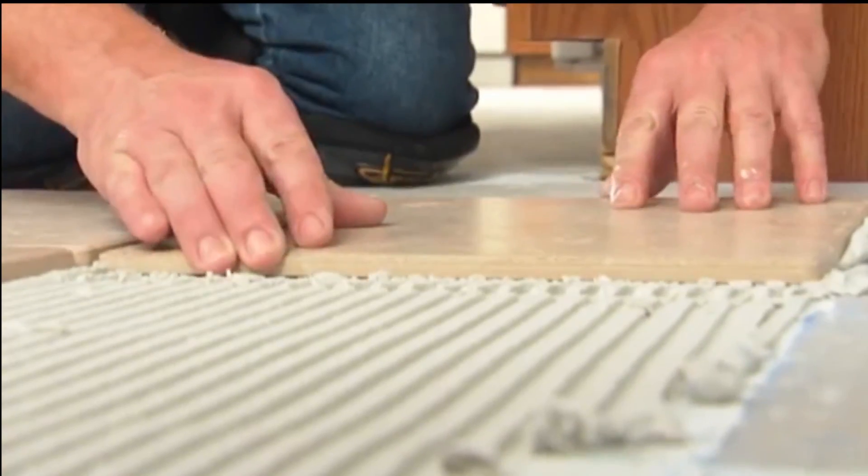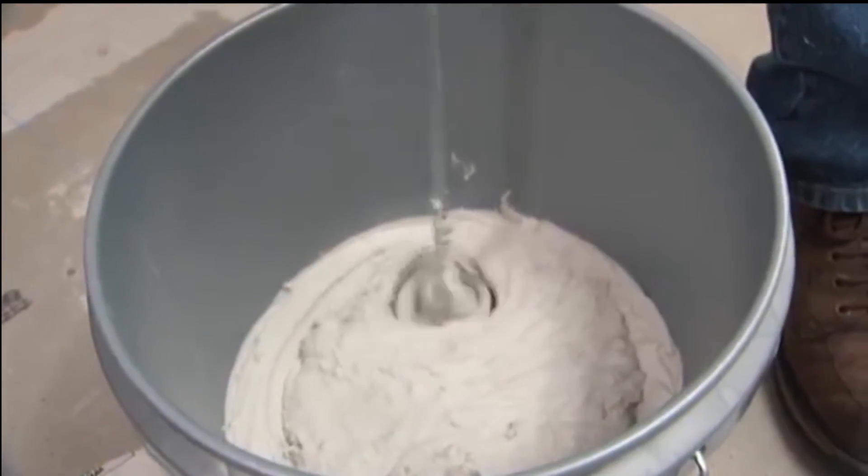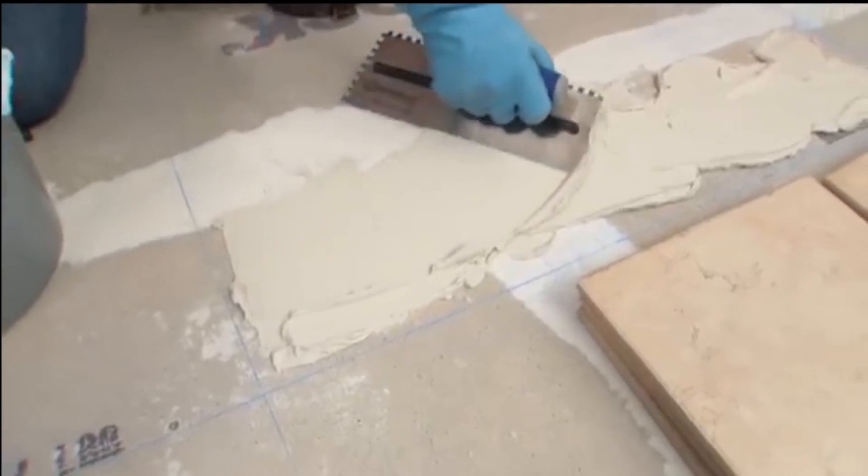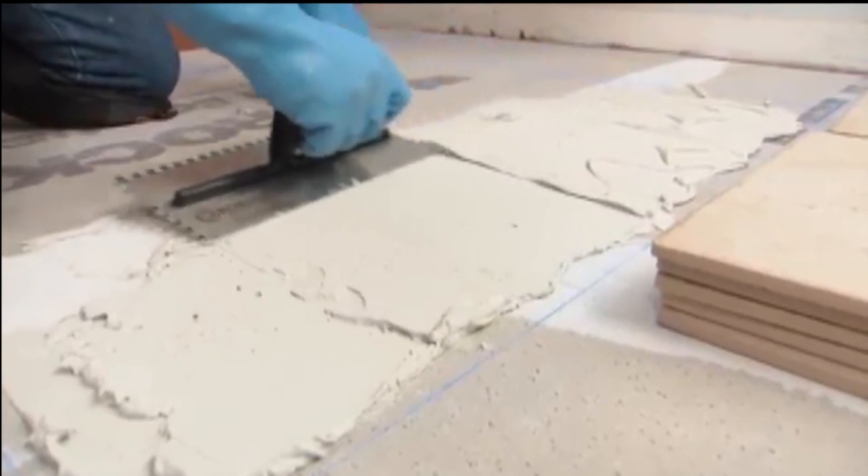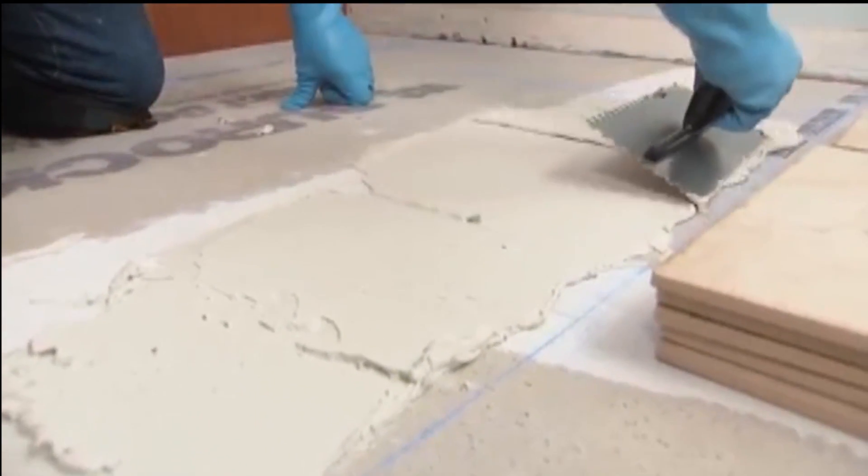We'll set our tiles in thin-set mortar. We'll mix it in a bucket to the recommended consistency. Then, starting at the cross section in the middle of the room, spread the thin-set with the trowel. Work within a three-foot section at a time and try not to cover your reference lines.